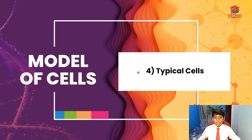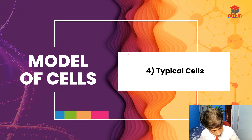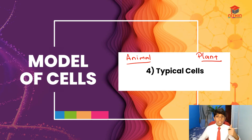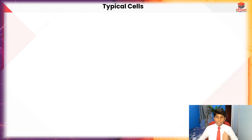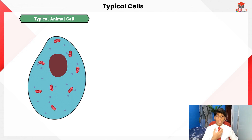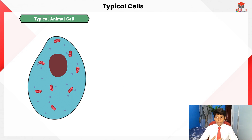For segment four, I'll cover typical cells — the typical animal cell and the typical plant cell. Do take note that there are some new parts to the animal cell that you're going to learn in secondary school. Let me go through each of the parts one by one.